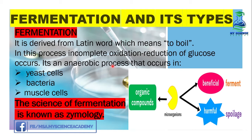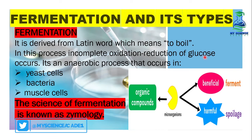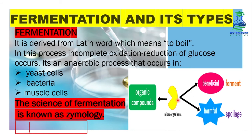Because in this process, oxygen is not available, it is called an anaerobic process. In the process of fermentation, glucose molecules break down — this is incomplete and mostly occurs in yeast cells, bacteria, and muscle cells. In this case, the microorganisms or bacteria involved are beneficial bacteria, not harmful bacteria, because harmful bacteria cause spoilage.